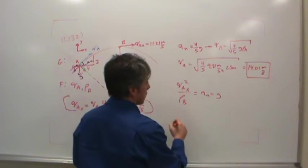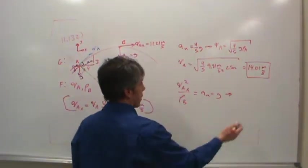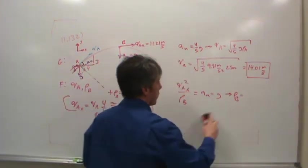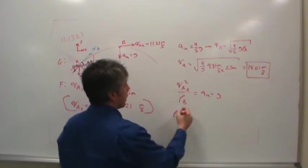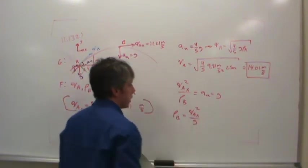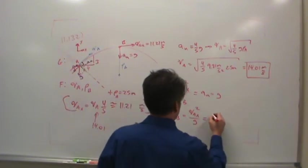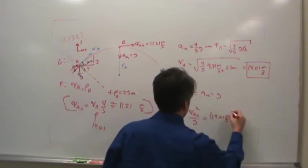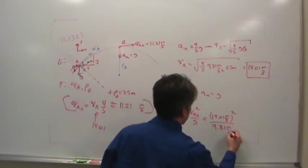All right, so what are we trying to find? We're trying to find the radius of curvature. So the radius of curvature of B would be equal to VAx squared divided by g. So let's plug in the numbers, see what we've got, and then we'll be done. So 14.01 meters per second quantity squared divided by 9.81 meters per second squared. And what do we have?